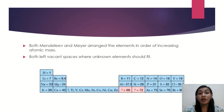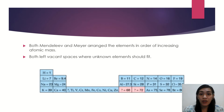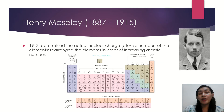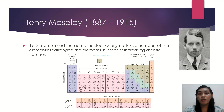Mendeleev was credited because of his periodic law. He stated that if the atomic weight of an element caused it to be placed in the wrong group, then the weight must be wrong. Mendeleev was also confident enough in using his table that he actually predicted some of the elements that were not yet discovered at that time. The modern periodic table we use today was actually modified by Henry Moseley, who determined the actual nuclear charge or atomic number of the elements and rearranged them in order of increasing atomic number.